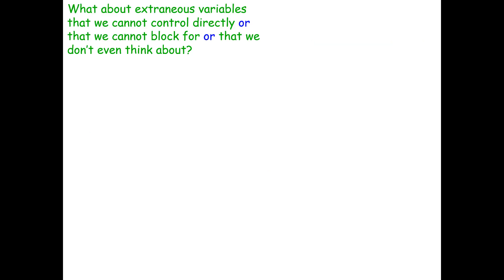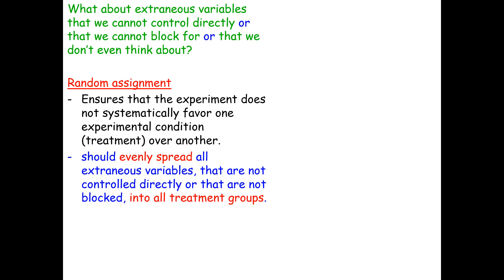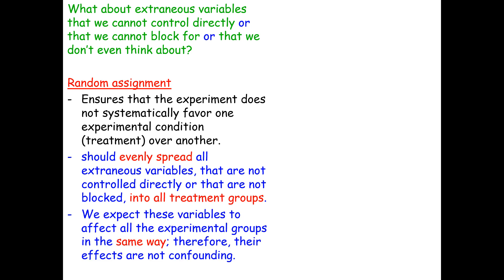What about extraneous variables that we can't control directly, or can't block for, or don't even think about? That's where random assignment comes in. It ensures that the experiment does not systematically favor one experimental condition or treatment over another. We expect these variables to affect all experimental groups in the same way, so their effects are not confounding.